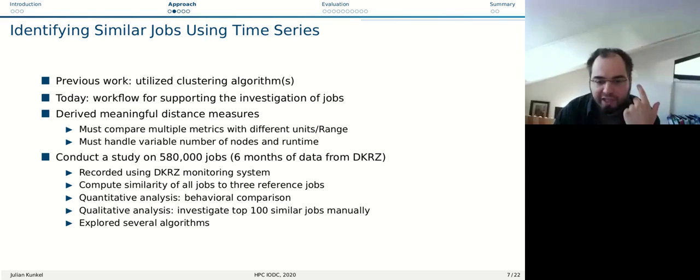We selected three jobs which have totally different characteristics that represent the overall jobs at DKRZ very well. We tried to say, let's assume we're interested to figure out jobs similar to those three reference jobs, similar to the support staff member that has one of these three reference jobs and asks what jobs are similar to those. We computed the similarity of all these other 580,000 jobs to those three reference jobs, then did a qualitative and quantitative analysis. In the qualitative analysis, we basically looked at the top 100 most similar jobs manually.